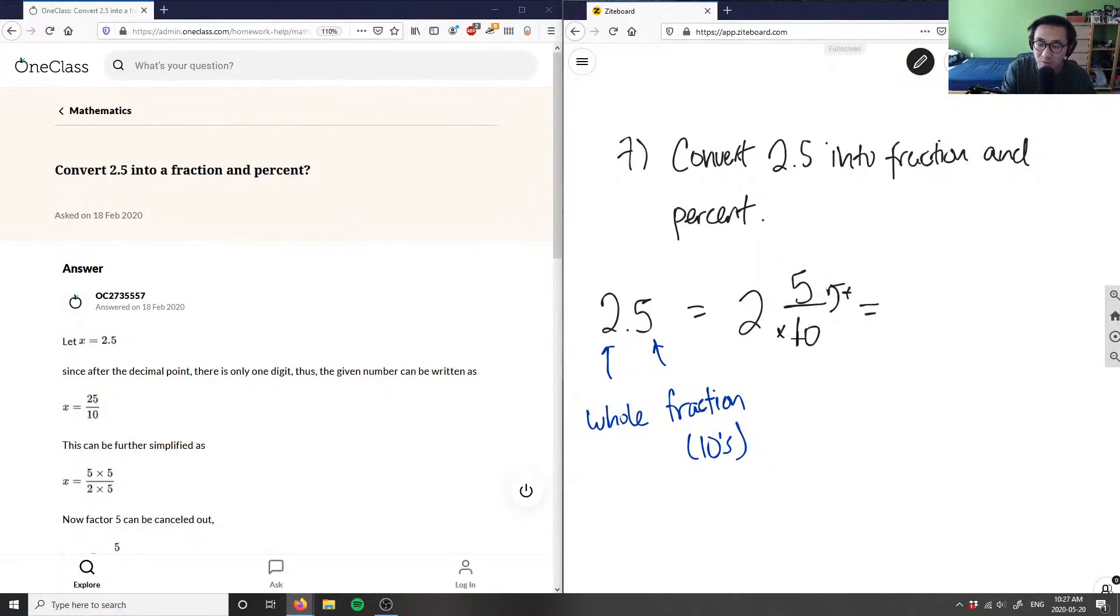So 2 times 10 here is 20 plus 5 is 25 over 10. And this here is 2.5 in a fraction, which is great.